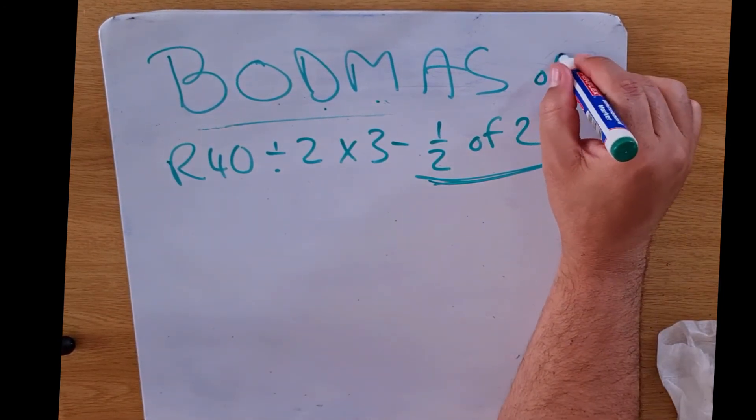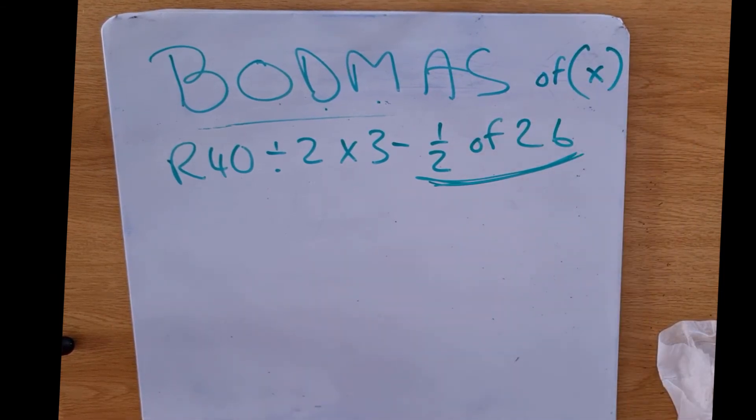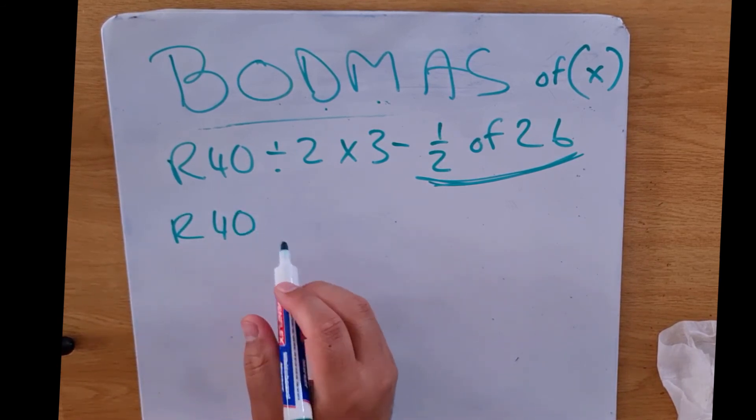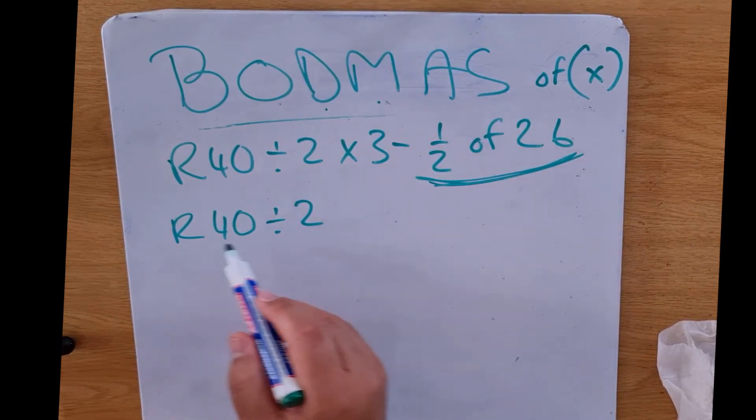Now you'll remember when we say half of, we actually say multiply. I'm just going to write this down: our 40 rand over here divided by 2. Now when it comes to BODMAS, from left to right what's going to happen?